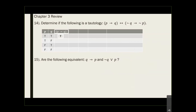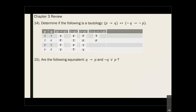The only time the conditional inside the first parenthesis is false is when the first thing is true and the second one is false — everywhere else is true. Before doing the second biconditional, we need the negation of Q and the negation of P inside the second parenthesis. The only time that is false is again when the first is true and the second is false.